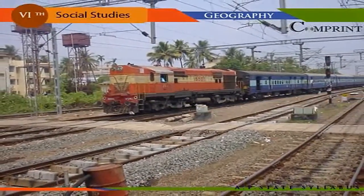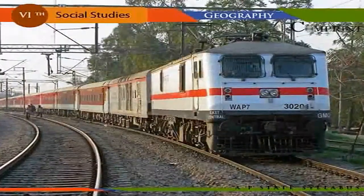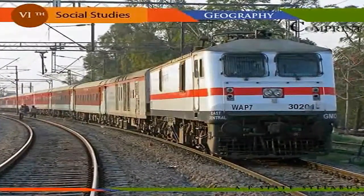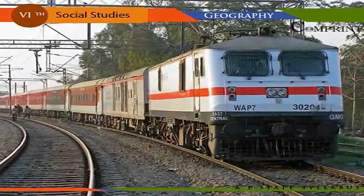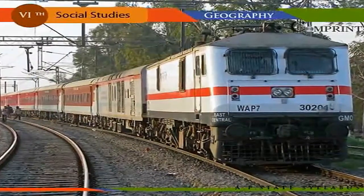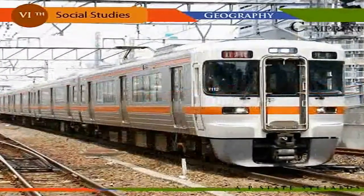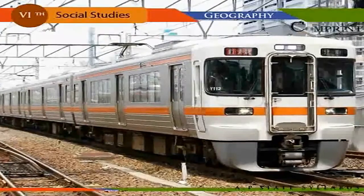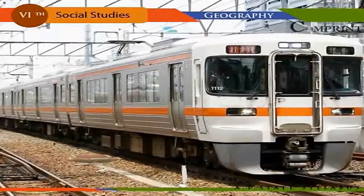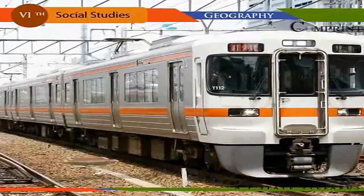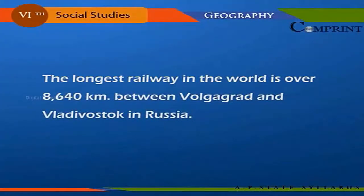The Indian railway is the largest in Asia, transporting 15.5 lakh tons of goods and nearly 28 million passengers every day. India has 62,700 kilometres of railway line. Japan has an extensive railway system with 32,200 kilometres of railway line. The longest railway in the world is over 8,640 kilometres, between Volgograd and Vladivostok in Russia.